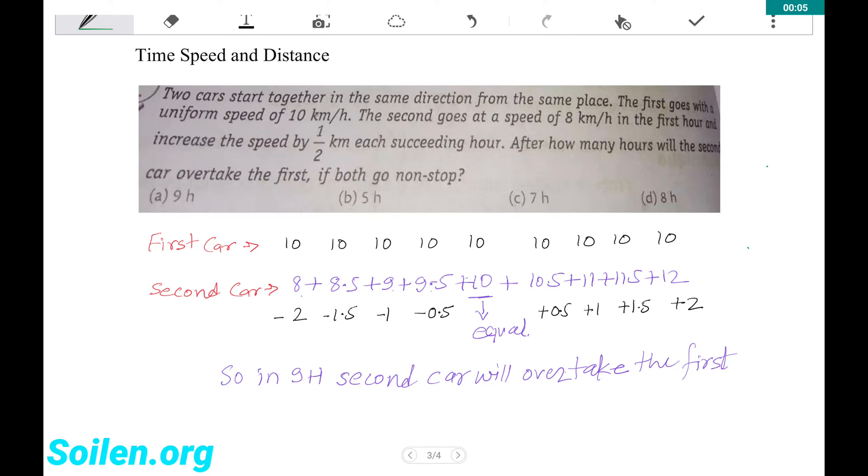Two cars start together in the same direction from the same place. The first goes with a uniform speed of 10 km per hour. The second goes at a speed of 8 km per hour in the first hour and increases the speed by half km each succeeding hour. After how many hours will the second car overtake the first if both go non-stop?